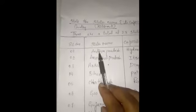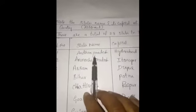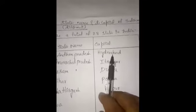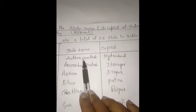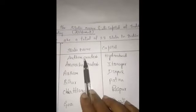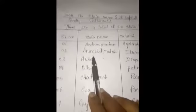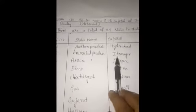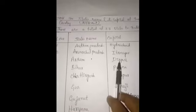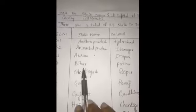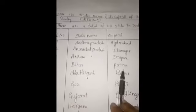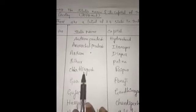To start with the first one: Andhra Pradesh — its capital is Hyderabad. Next is Arunachal Pradesh — its capital is Itanagar. Assam's capital is Dispur. Next, Bihar state's capital is Patna.